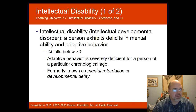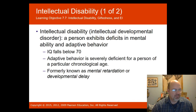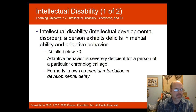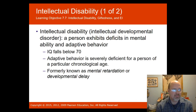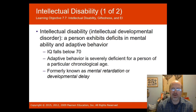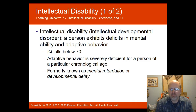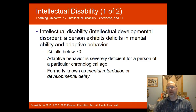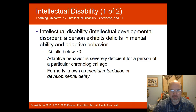Intellectual disability is an intellectual developmental disorder where a person exhibits deficits in mental ability and adaptive behavior — where a student's IQ falls below 70, or more than two standard deviations from the norm. Adaptive behavior is severely deficient for a person of a particular chronological age. Formerly known as mental retardation, that term is no longer used. Other categories include learning disabilities in specific areas like speech, reading, writing, or math, and emotional disturbance or behavior disability.